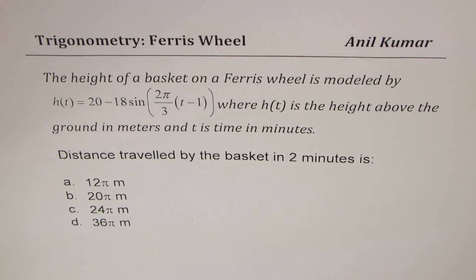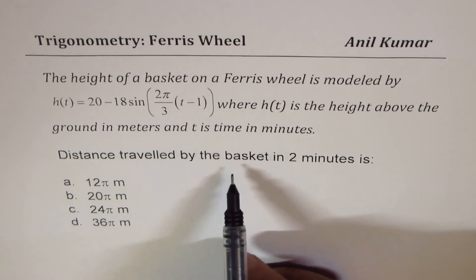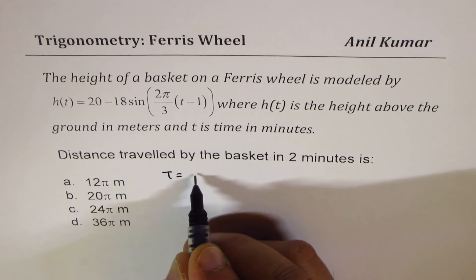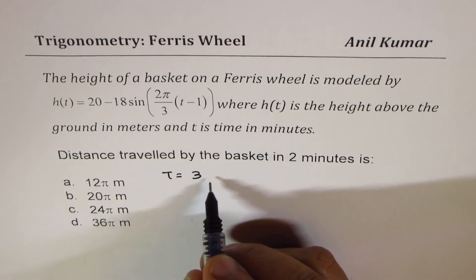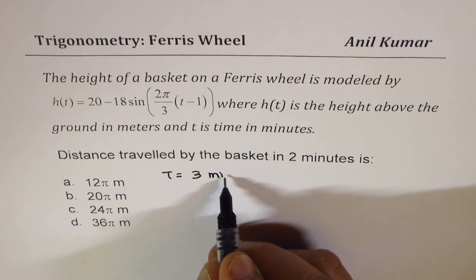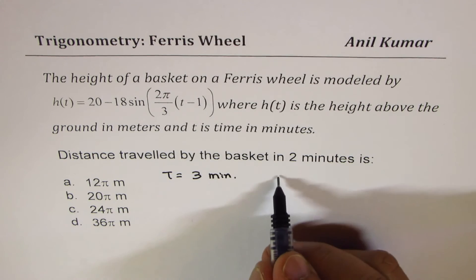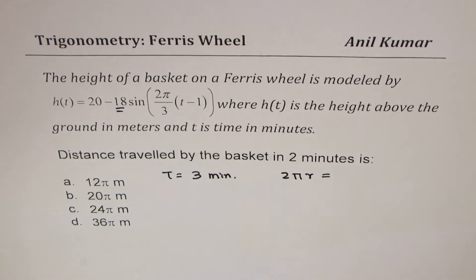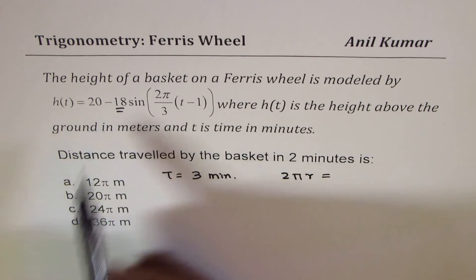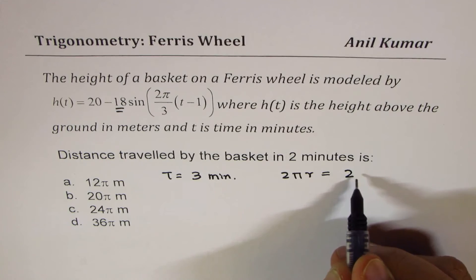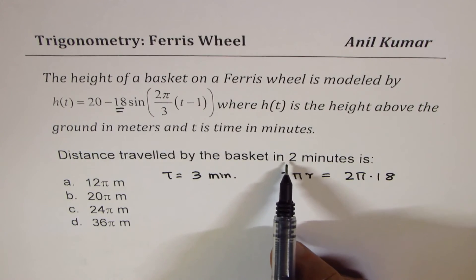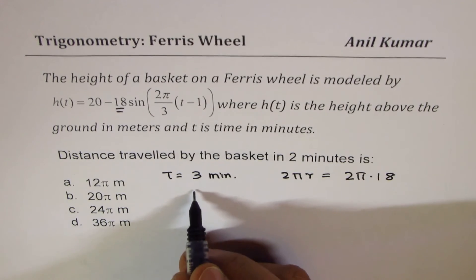The next question, the second last question here is, distance traveled by the basket in 2 minutes is? Now, we know time period is how much? Is 3 minutes. So in 3 minutes, it travels 2πr. 2πr radius is how much? Well, the radius for this is 18. That is the radius. So it travels 2π times 18 in 3 minutes. We want to know how much travels in 2 minutes. So in 1 minute, it is going to travel, let me write this as 36π.